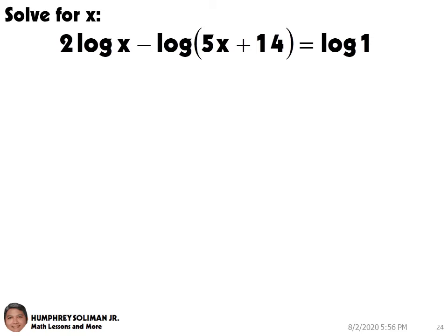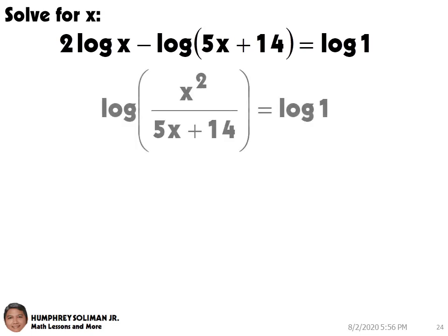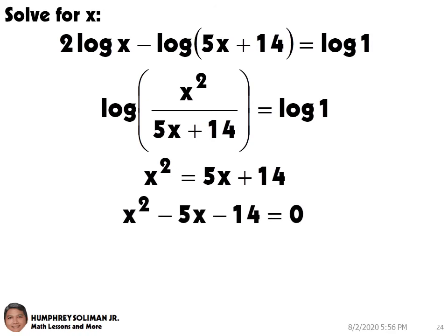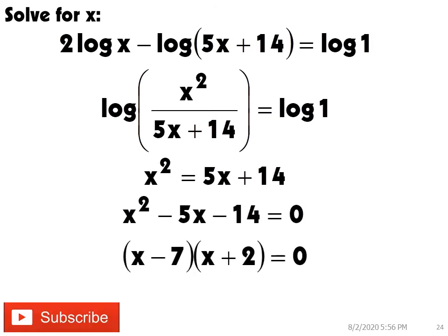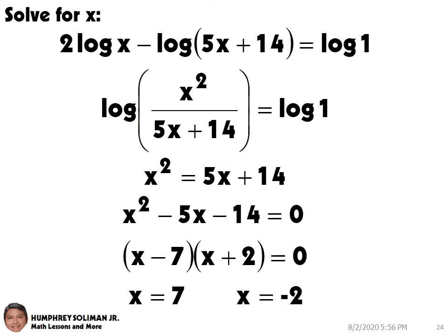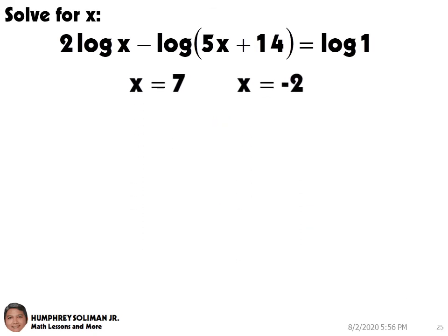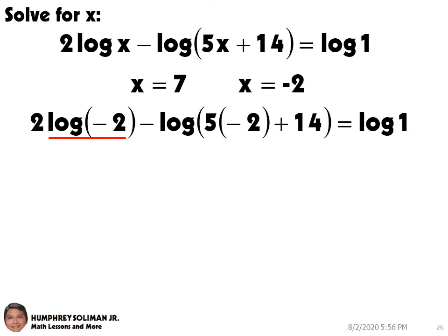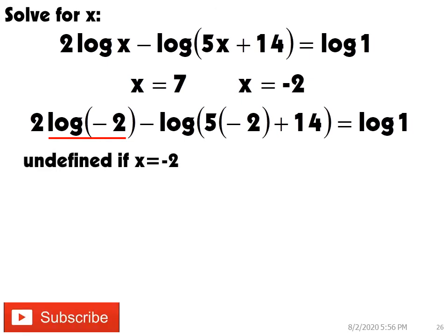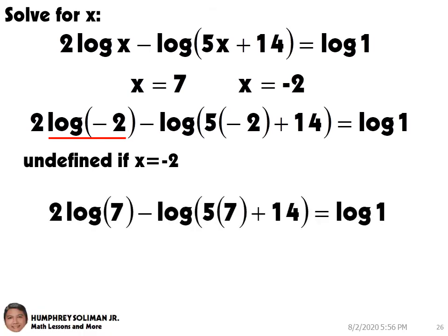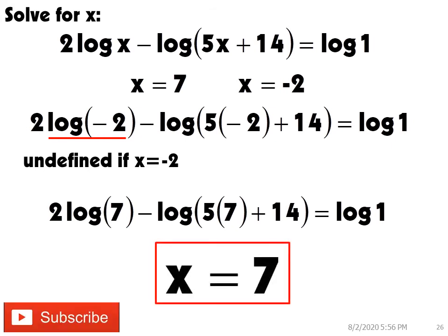Let's try another example. Here, we can write the left side as a single logarithm. And then, we can rewrite this without the logarithms. After that, equate it to 0. We now need to solve the quadratic equation. Using factoring, this will give us x equals 7 and x equals negative 2. If we get a solution which is negative, it would be wise to check for extraneous solutions. If we substitute negative 2 to the original equation, we will have a logarithm of a negative number. This is undefined if x equals negative 2. And, if we substitute 7 to the original equation, it makes the equation true. So the only answer is x equals 7.